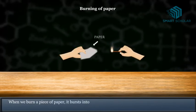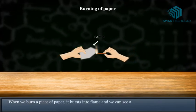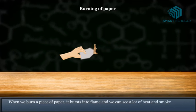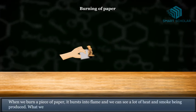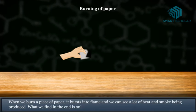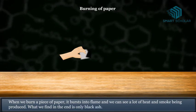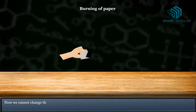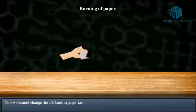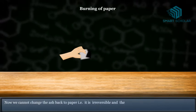When we burn a piece of paper, it bursts into flame and we can see a lot of heat and smoke being produced. What we find in the end is only black ash. Now, we cannot change the ash back to paper. It is irreversible.